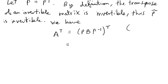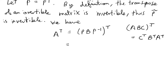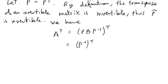When you have multiple matrices multiplied together and then take the transpose — for example, (ABC)^T equals C transpose times B transpose times A transpose — the order of the matrices flips. Applying this to our right-hand side, we get P inverse transpose times B transpose times P transpose.